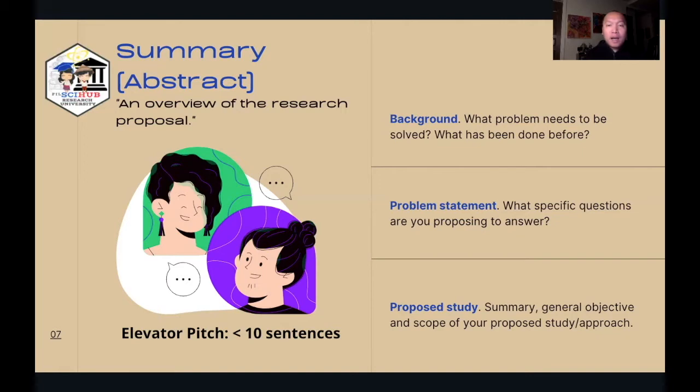The last part is the proposed study. You have to concisely express your objectives for the program and the scope of the project. Typically per section we dedicate two to three sentences. So effectively for an abstract, you should not go beyond 10 sentences.